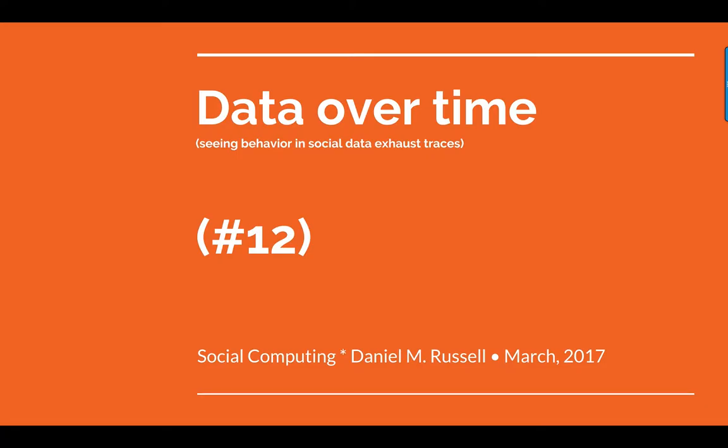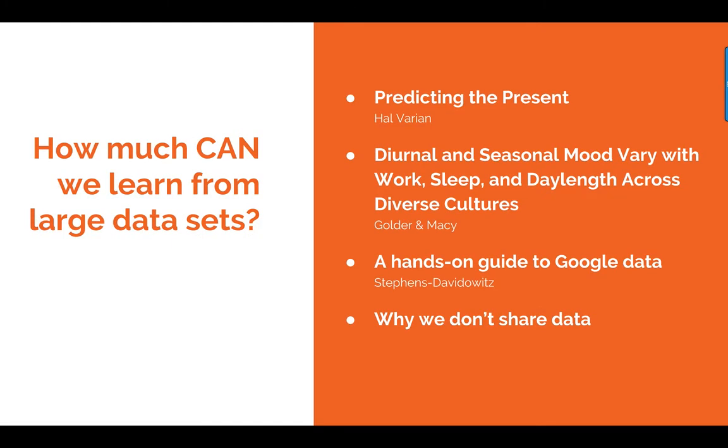Last exciting episode, we talked about social behaviors through computing and aggregate, looking at things like Twitter, AFED, and the social contagion emotional contagion experiment done on Facebook. This is more in that same vein. What we're going to do in particular is talk about how much we can learn from large data sets, and we're going to start to move into talking about how you actually do it.